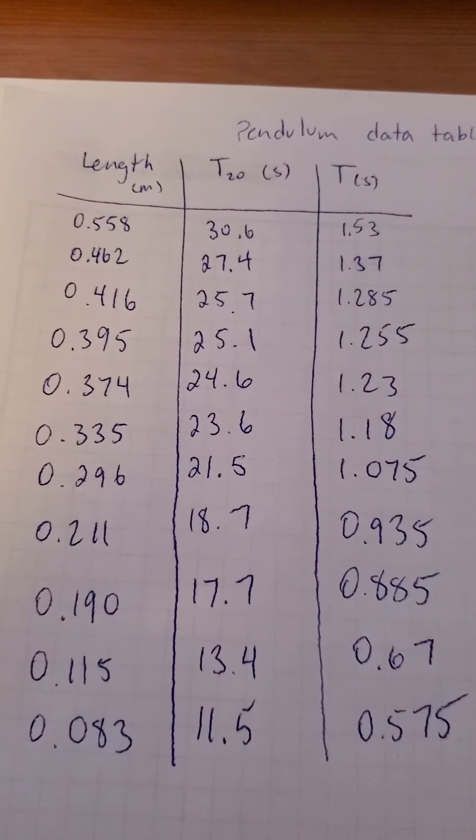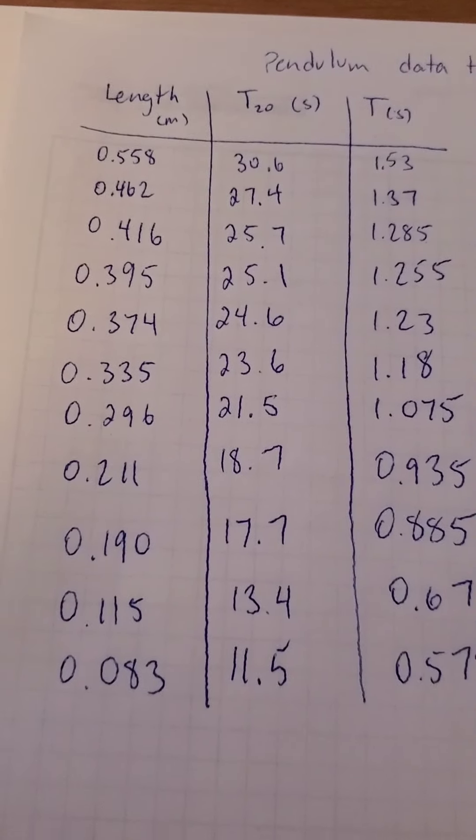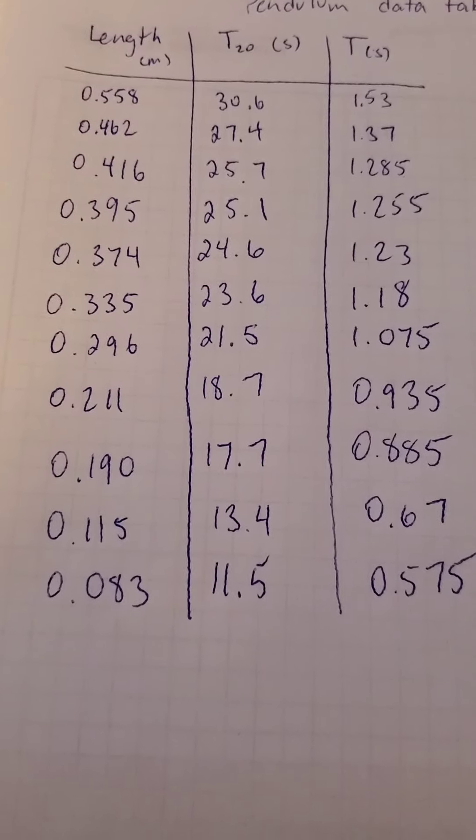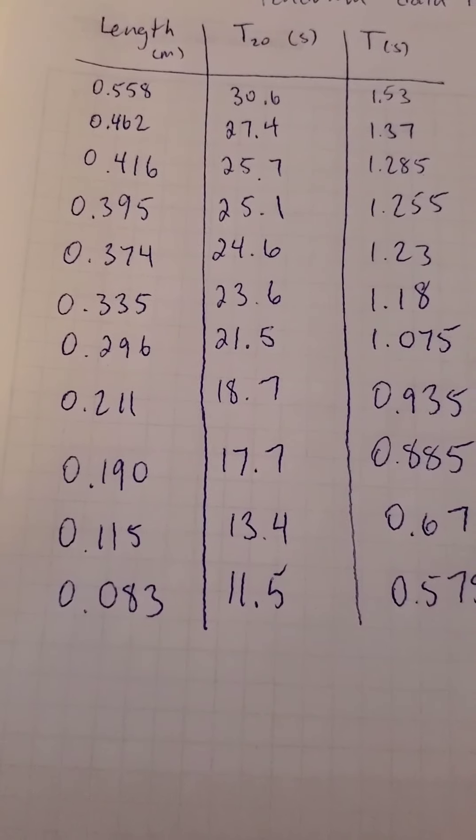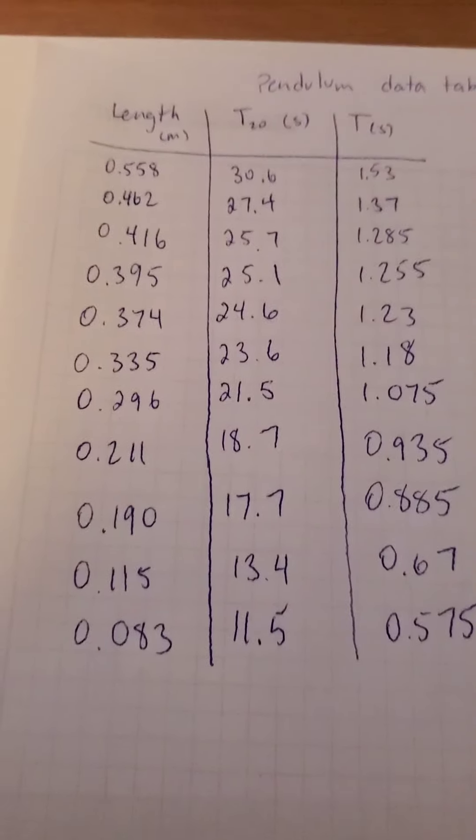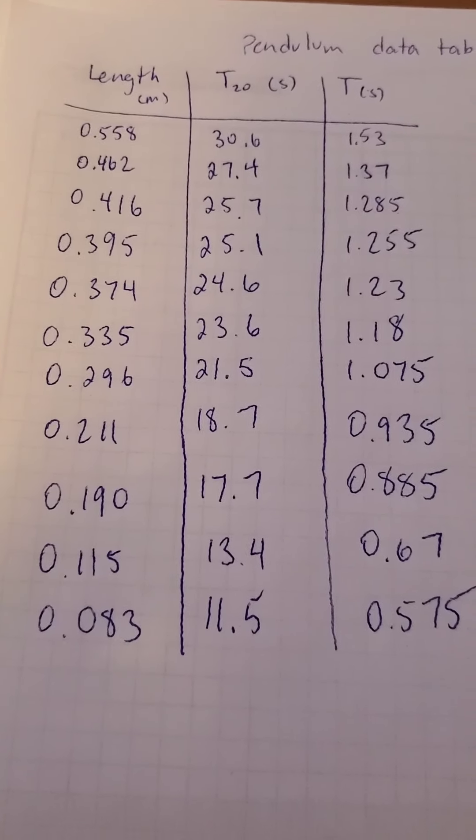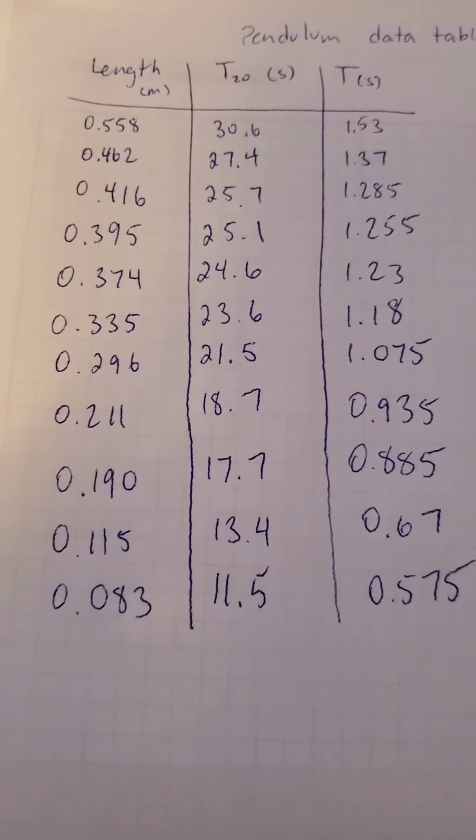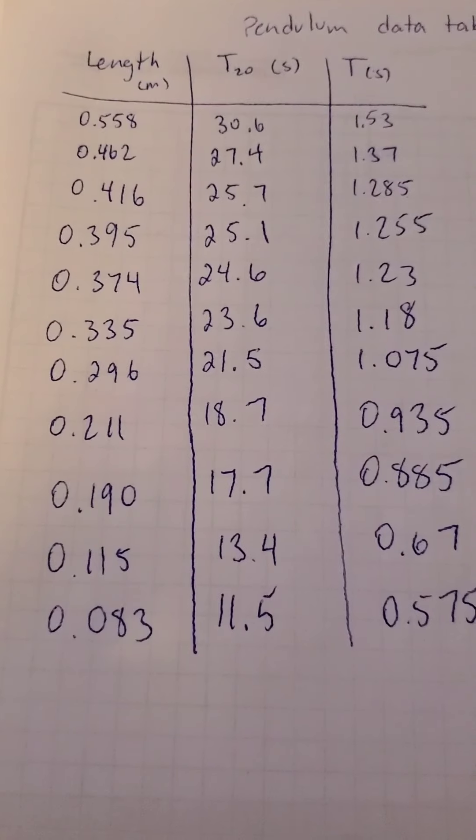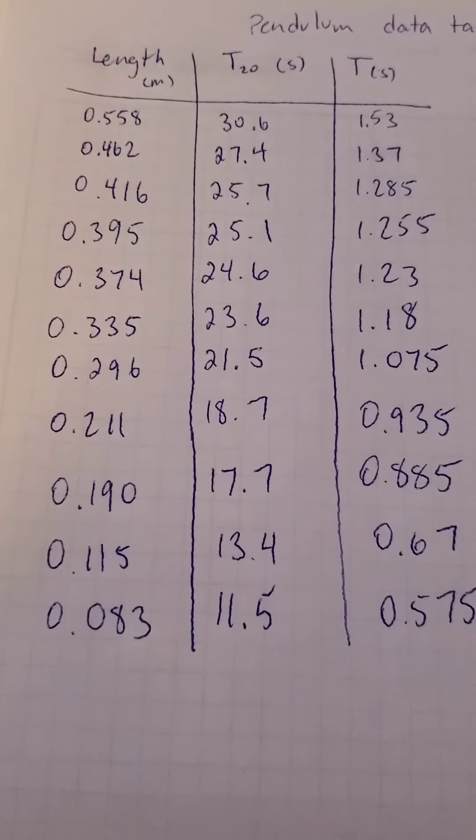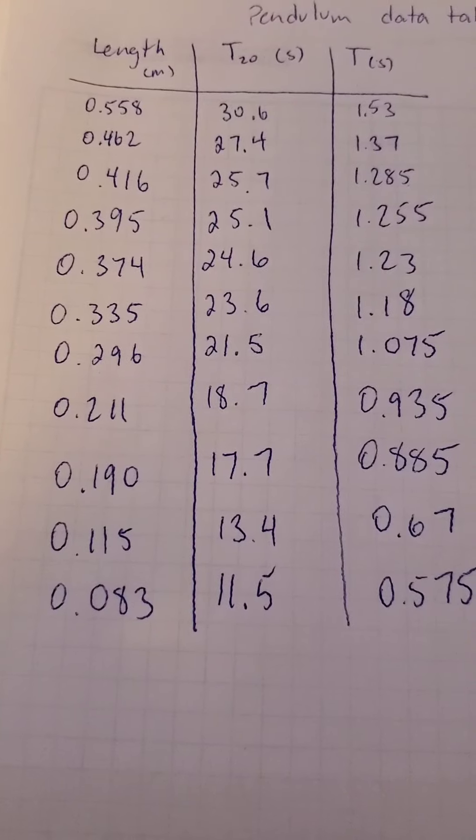So I just had a good time changing my pendulum lengths, measuring 20 periods, and then dividing by 20 to get the period. This is my data. I actually didn't know when to stop, and I did 11 data points. I'm asking you to do 10 data points. If you're efficient, I don't think it'll take you much longer than about 20 minutes once you got everything set up.